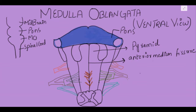Lateral to the pyramid we have another swelling, which we call the olive. So first we have the anterior median fissure, then the pyramid on either side, and then the olives lateral to the pyramids.